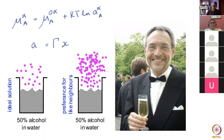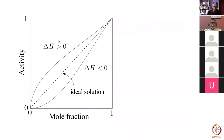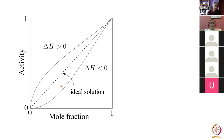For an ideal solution, activity scales exactly with the mole fraction — a straight line of slope one — and the activity coefficient is constant. For a solution in which unlike atoms attract, you get a negative deviation from this line, so the activity coefficient is no longer constant. This region where the concentration of one species is very high is known as the Raoultian region, and the region where the concentration of the solute is very low is the Henry's Law region. When atoms tend to cluster, you clearly are not following the ideal solution.